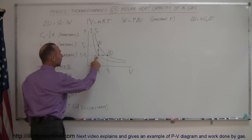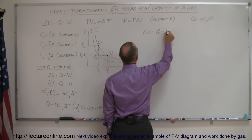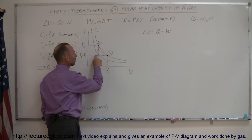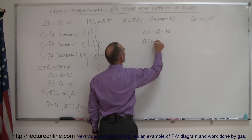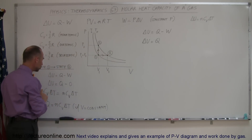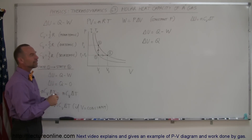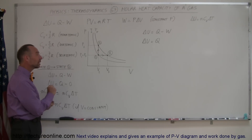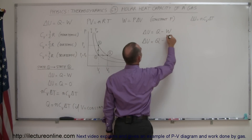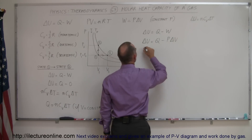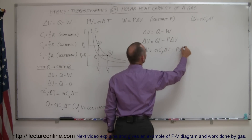What if we go from state one to state three? Again, starting with the first law of thermodynamics: delta U equals Q minus W. Since the pressure does not change, W equals P delta V, so delta U equals Q minus P delta V. Now, heat is added to the gas but the volume changes, which means we cannot use C sub V. In this case we need to use C sub P — the molar heat capacity at constant pressure. So delta U equals Q minus P delta V, meaning Q equals N C sub P delta T minus P delta V.